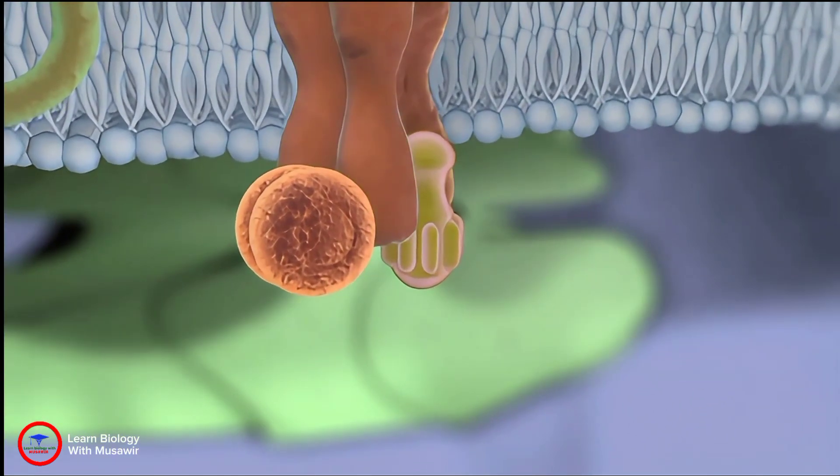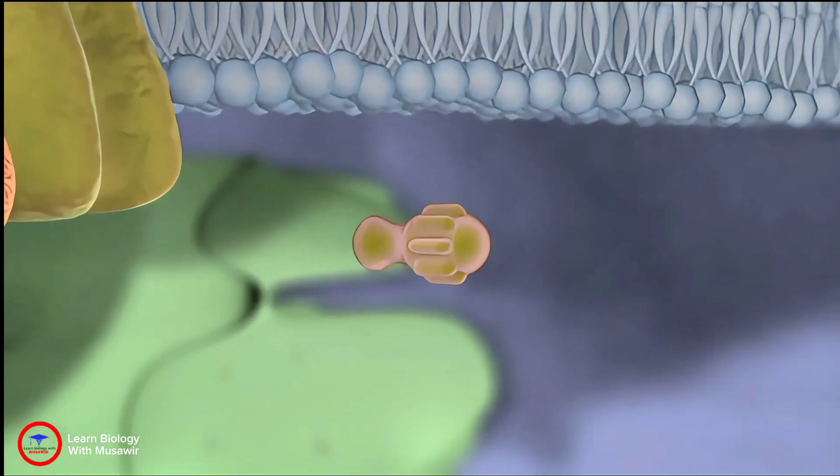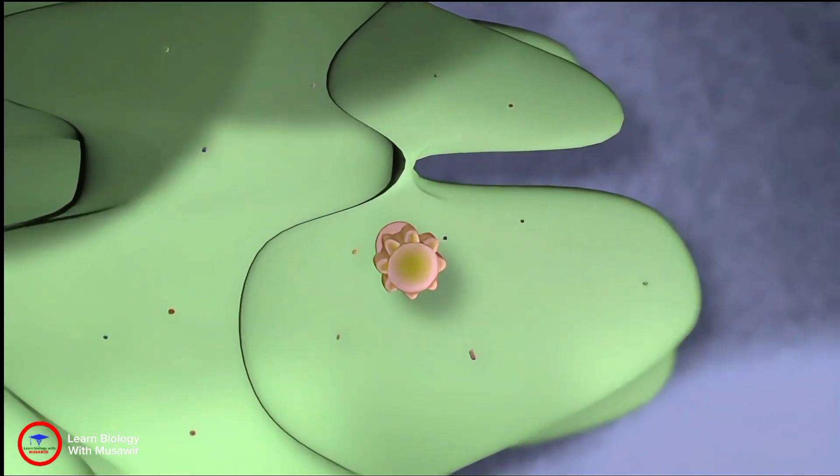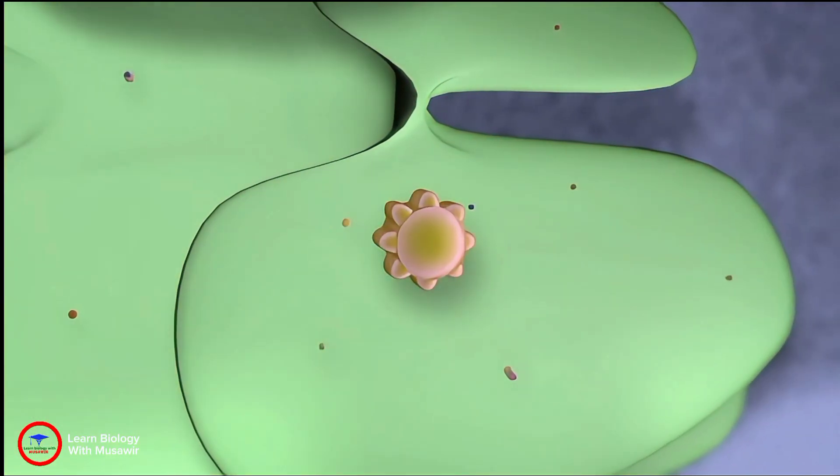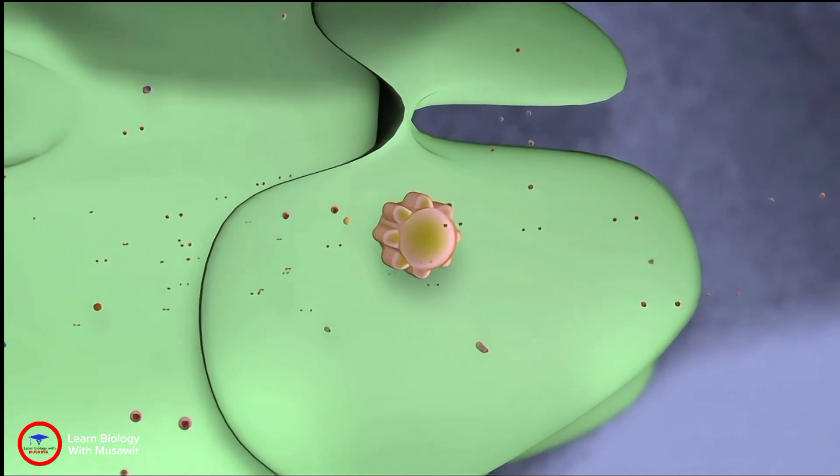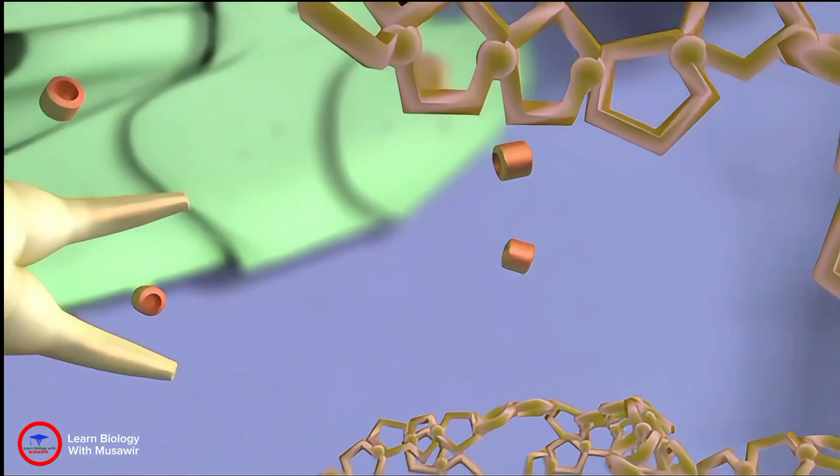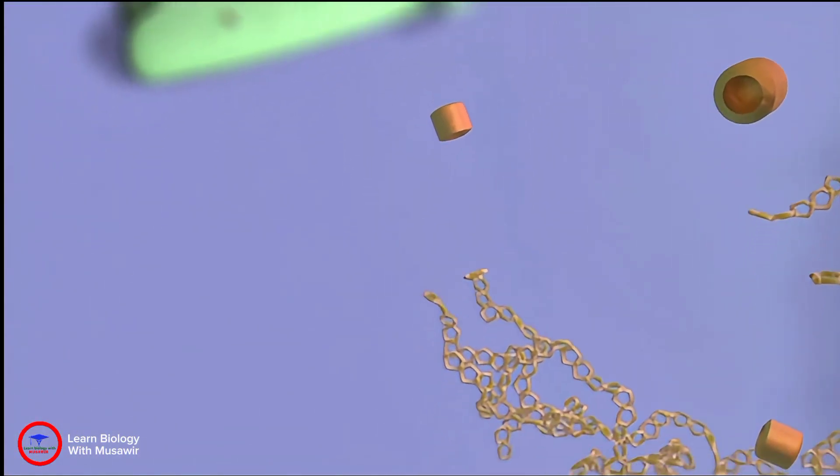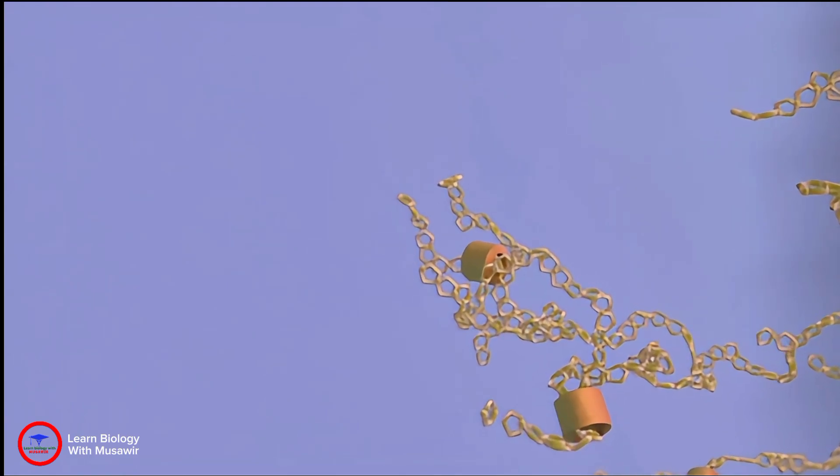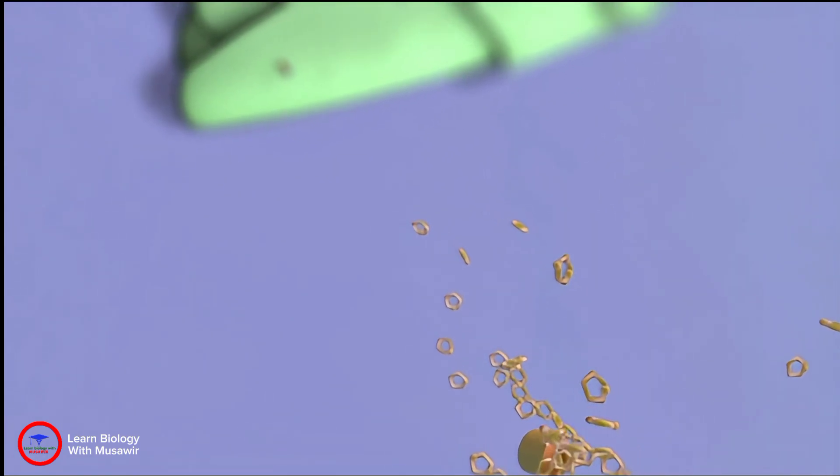The signal-passing machinery inside the cell can look and work very differently depending on the intended effect. Here we see a signaling cascade that results in the release of energy molecules. Once liberated, they are sent on their way via the bloodstream to power cells in another area of the body.